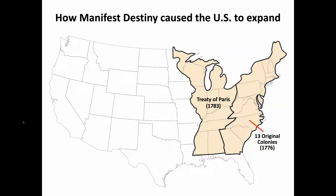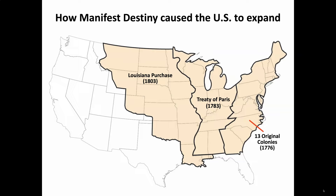In 1803, Thomas Jefferson, president of the United States, purchased the Louisiana Territory from France, basically doubling the nation's size again. Then in 1819, the United States signed a treaty with Spain that gave the U.S. Florida — known as the Adams-Onís Treaty.